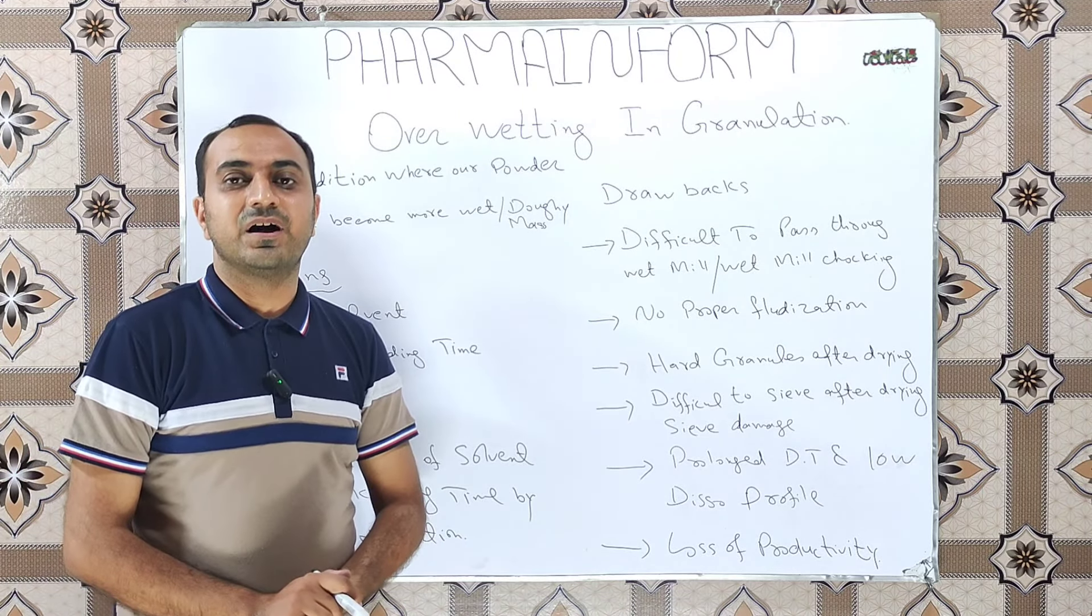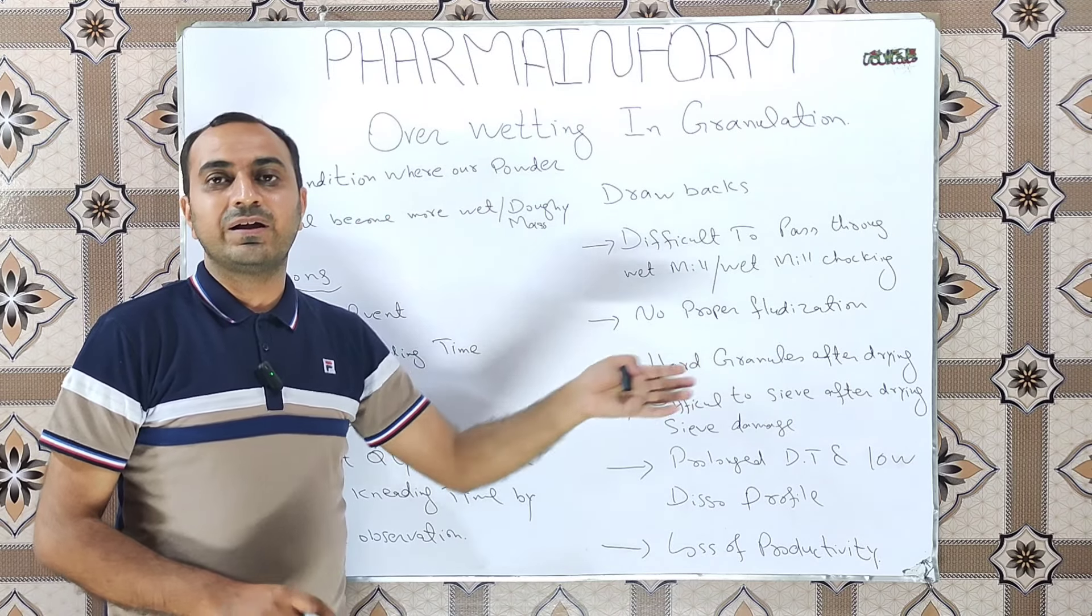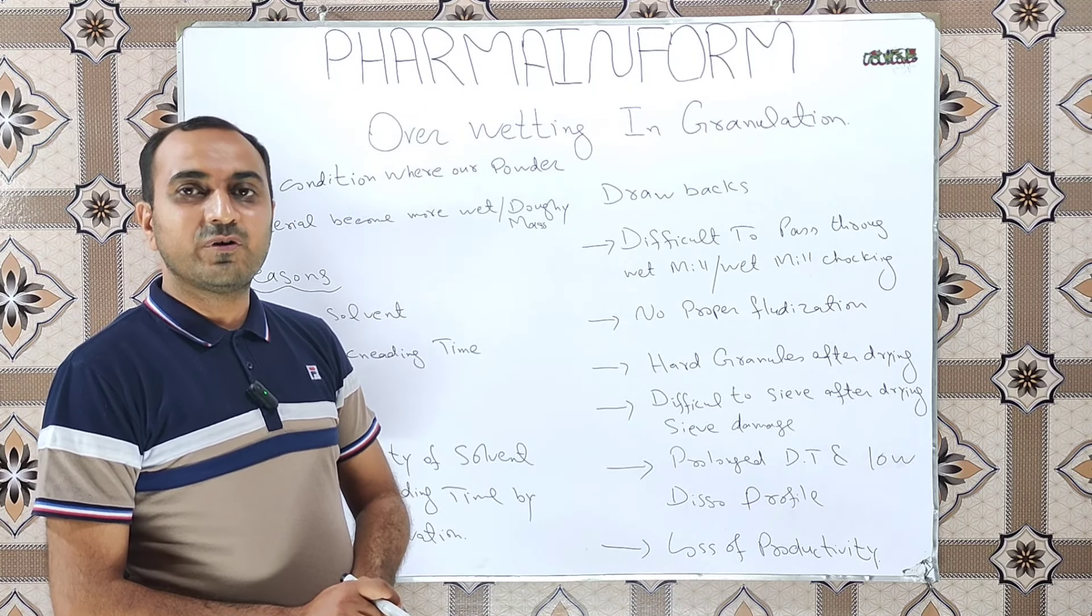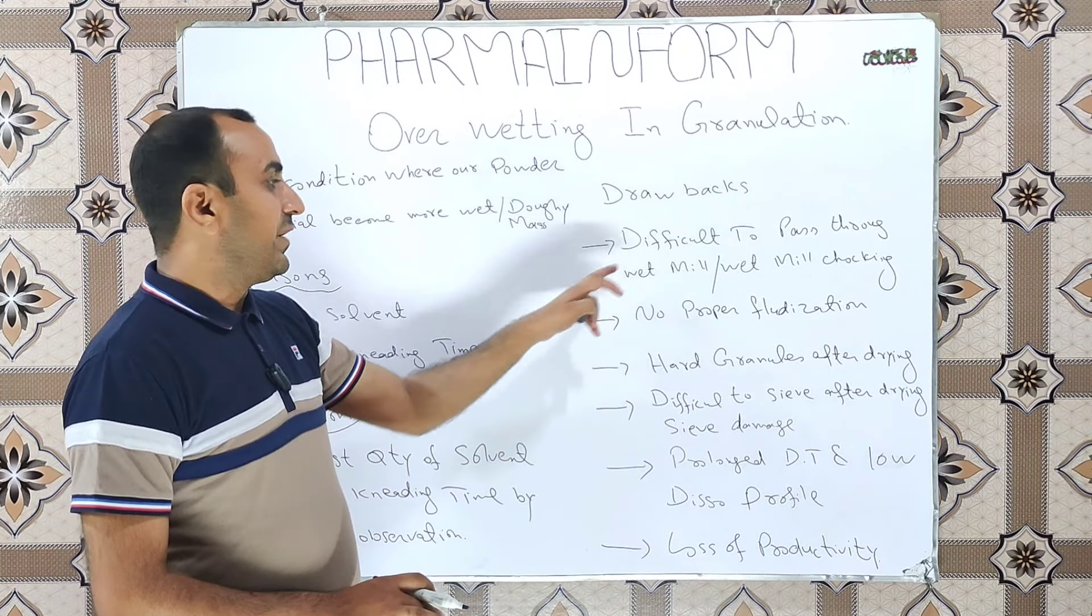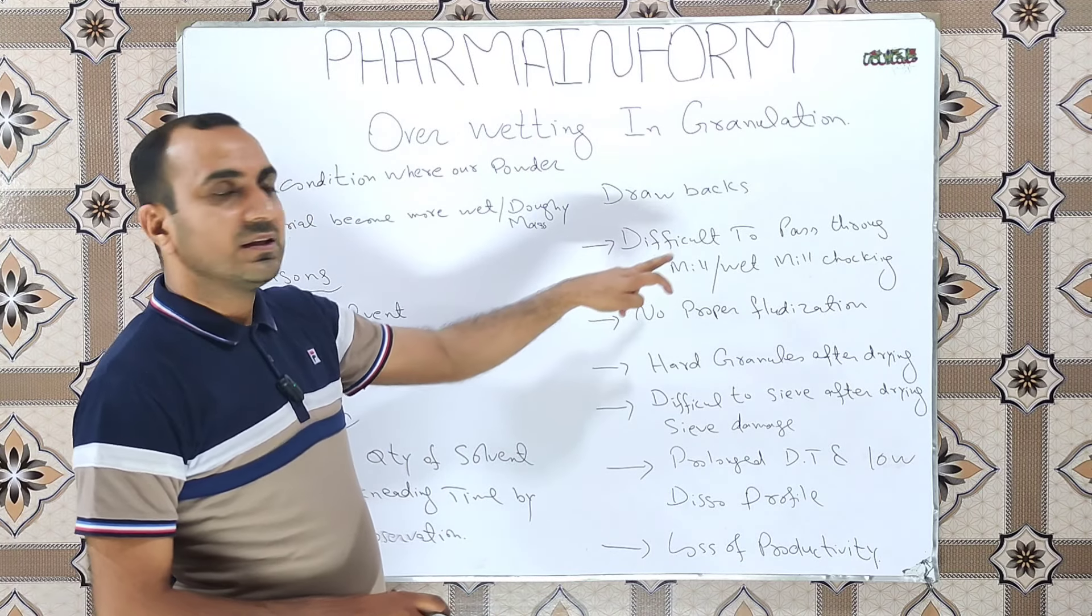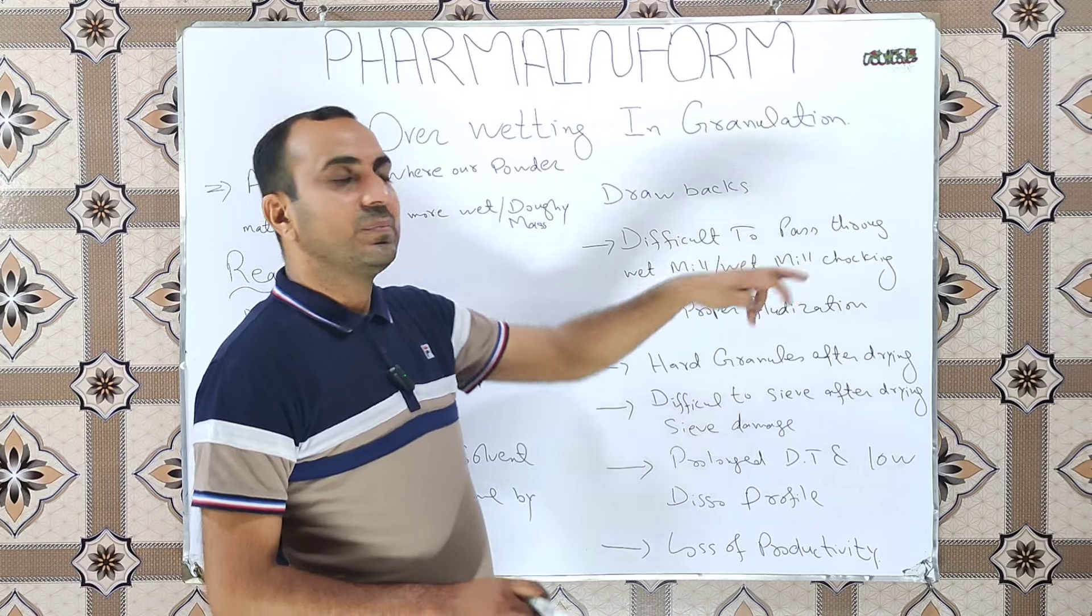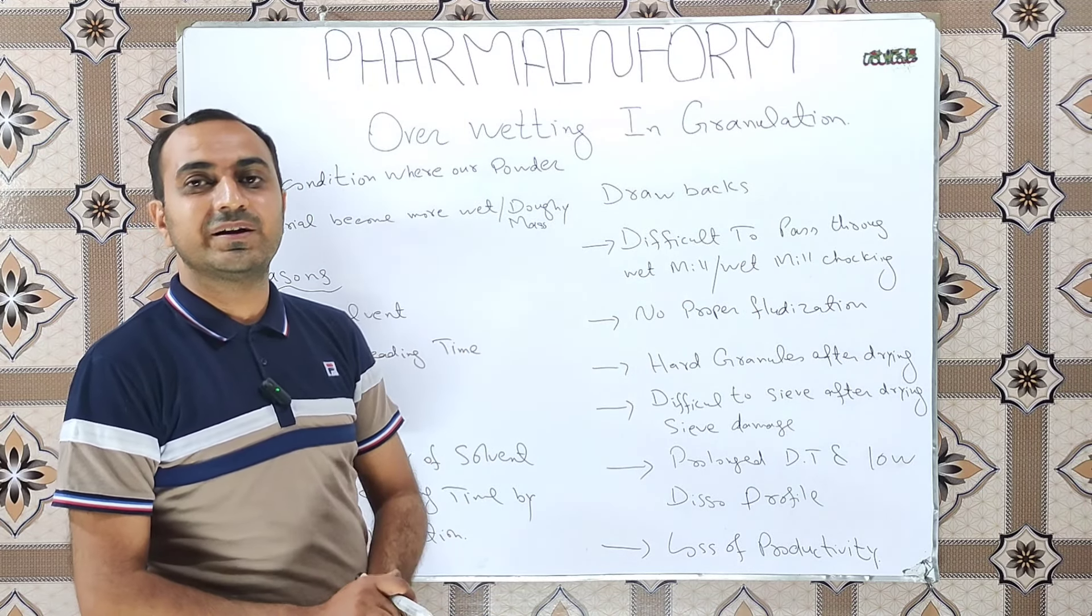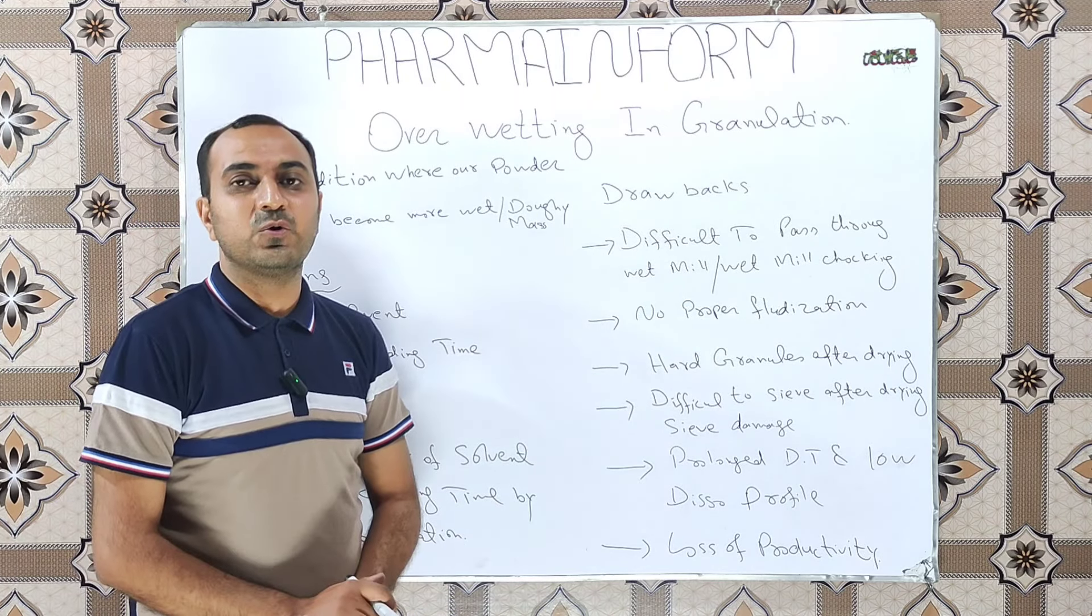What are the drawbacks of overwetting? If our batch is overwet, what will happen next? The drawbacks of overwetting: difficult to pass through the wet mill. When our powder material is overwet or doughy, it will not easily pass through the wet mill and wet mill choking will be observed. Next, when we go towards drying this batch in a fluidized bed dryer, proper fluidization will not be achieved.